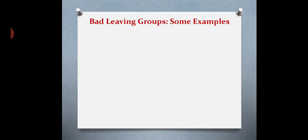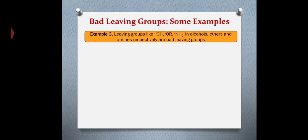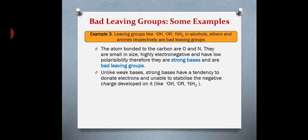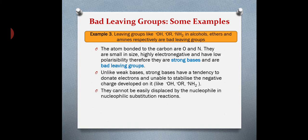Some examples of bad leaving groups are OH⁻, OR⁻, and NH₂⁻ in alcohols, ethers, and amines respectively. The atom bonded to the rest of the molecule is oxygen or nitrogen, which are electronegative, smaller in size, and less polarizable, giving them the characteristics of strong or hard bases. Strong bases are poor leaving groups because they tend to donate electrons rather than holding them, making them less stable and unable to be displaced by nucleophiles.